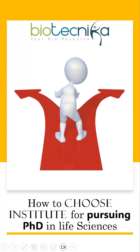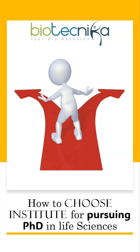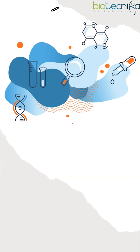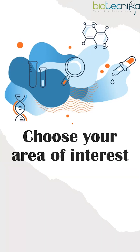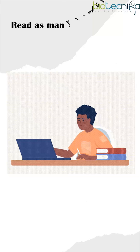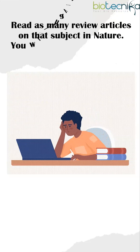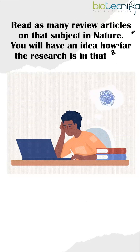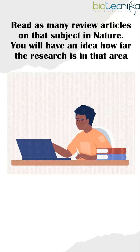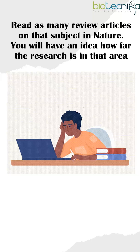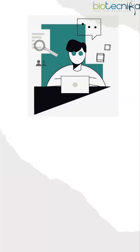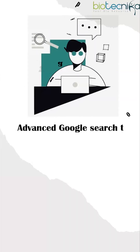How to choose an institute for pursuing a PhD in Life Sciences. First, choose your area of interest. Read as many review articles on that subject in Nature. You will have an idea of how far the research is in that particular field.